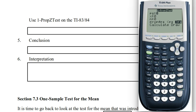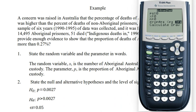And now it asks me what p-naught is. So let's go back and remind ourselves of that. p-naught is 0.0027. x is the number of aboriginal prisoners who died in custody, 51. n is the total number of aboriginal prisoners, 14,495. And then for our alternative hypothesis, we see that we're interested in, or we claim that the proportion for aboriginal prisoners is greater than 0.0027.